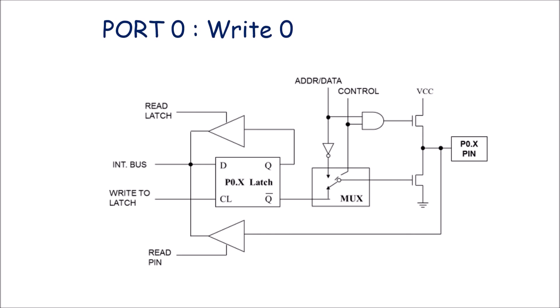To write logic 0 at a port terminal of port 0: we put 0 on the internal bus, connected to the D input of the flip-flop. Q output is 0 and Q bar is 1. Since control signal is 0, the MUX connects the gate to Q bar, so the gate is at 1 and the lower switch turns on. The upper switch remains off since control is 0. The output pin is connected to ground through the lower switch, so logic 0 is written at the pin terminal.